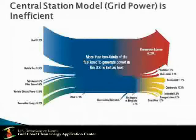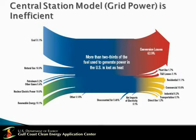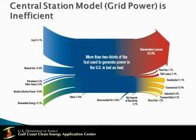Let's begin by examining the efficiency of the central station model, commonly known as the electricity grid. This schematic summarizes how electricity is produced and how it is finally consumed. On the left in blue, you can see the typical fuel mix, which is heavily dominated by coal, comprising about 51% of the fuel supply. On the bottom right of the diagram, you will find in yellow the end use of this energy in the residential, commercial, industrial, and transportation sectors. If you focus on the upper right-hand corner in red, you will find conversion losses — heat exported from these distant power plants. The net efficiency of the grid is roughly 30%. In other words, 70% of the input energy is not utilized.